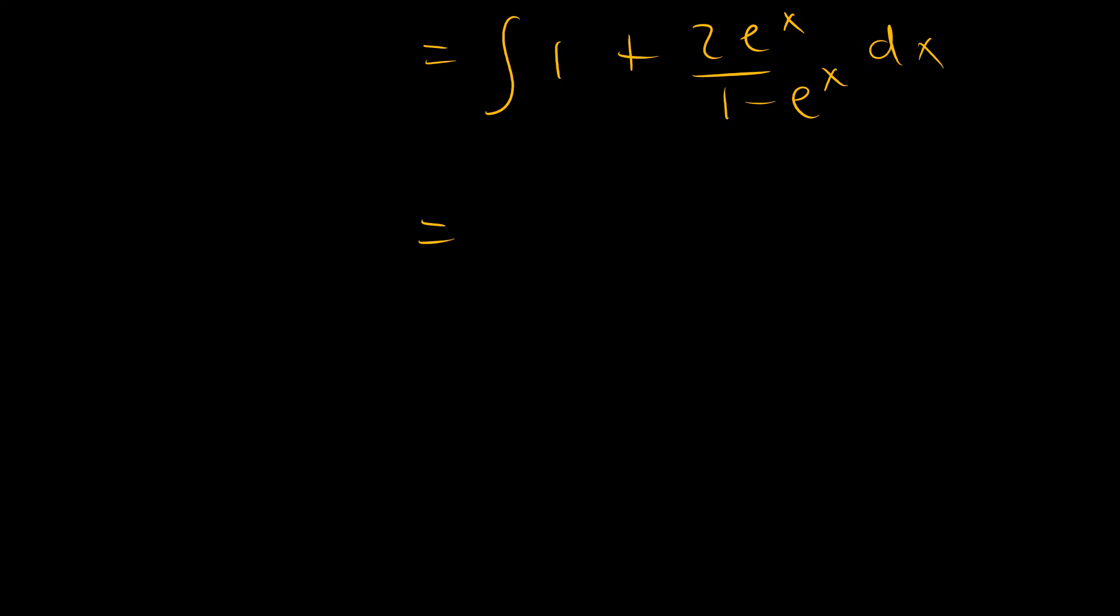So, this is the same as 1 plus 2e to the power x over 1 plus 2e to the power x over 1 minus e to the power x.